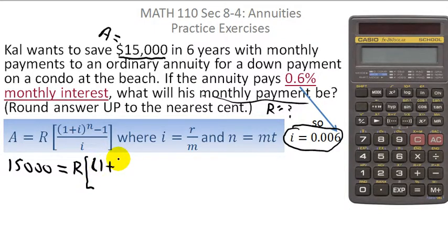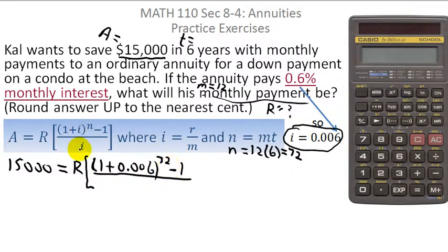Using our formula, we get 1 plus 0.006. That quantity is raised to the power of n. So we have to calculate n. That's easy because m is how many times we're compounding per year. Monthly means 12 times a year, so m is 12. We're doing it for six years, so t is 6. And 12 times 6 is 72. So the power of n that we're raising it to is 72. Then we want to take away 1, and the entire quantity is divided by i, which is 0.006.